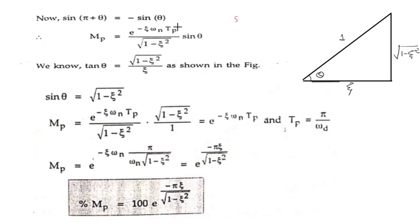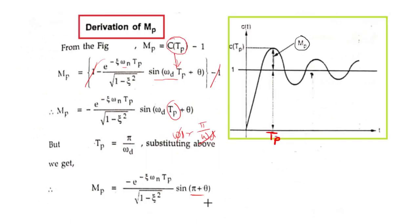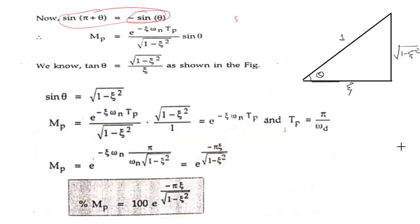We know that sine(π + θ) is equal to minus sine θ. So when we substitute, the minus from the expression and the minus from sine cancel, and the remaining term is: mp is equal to e raised to minus zeta·ωn·Tp divided by under root 1 minus zeta squared, times sine θ.